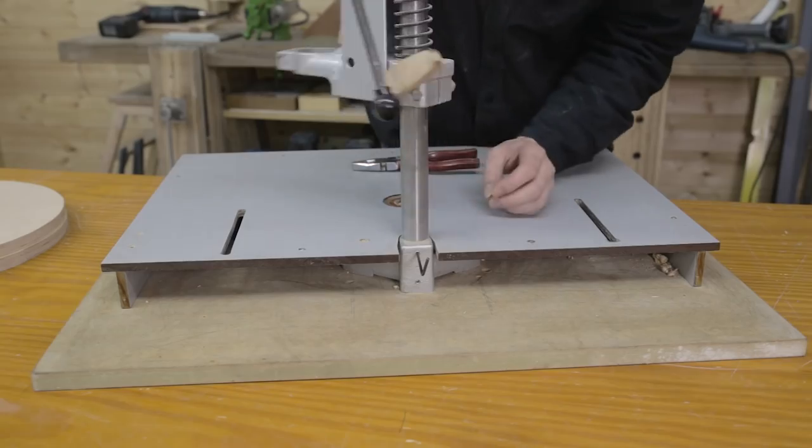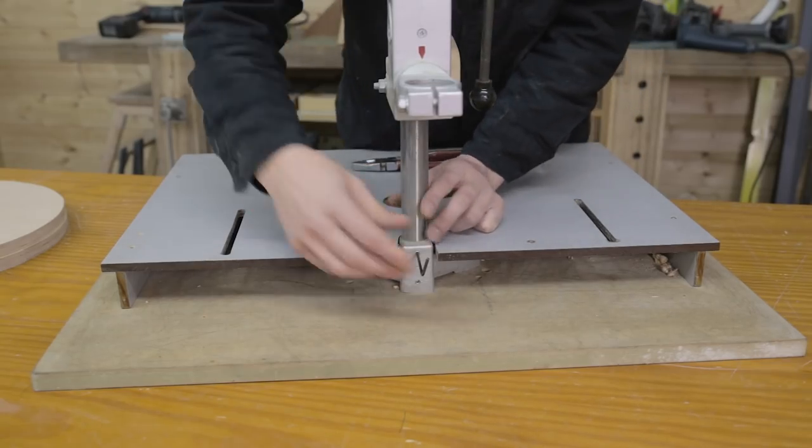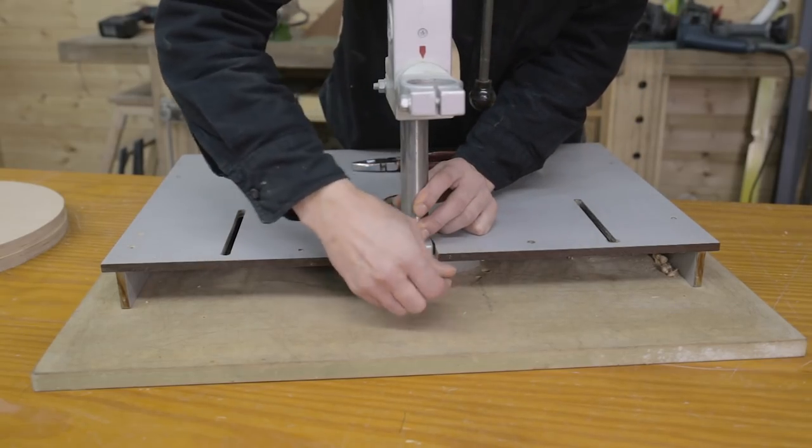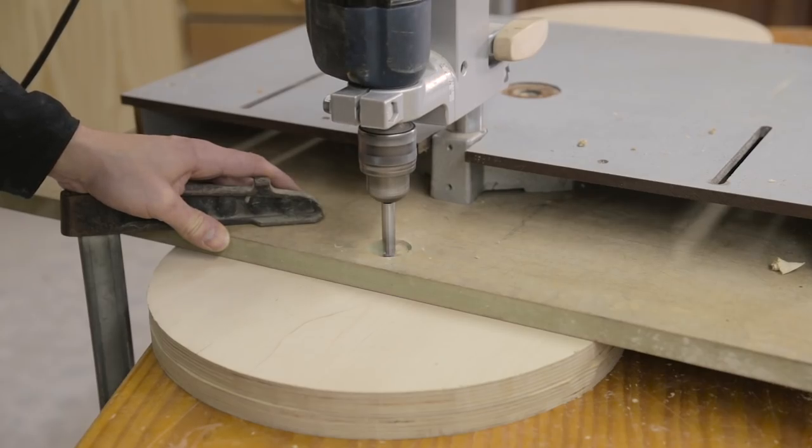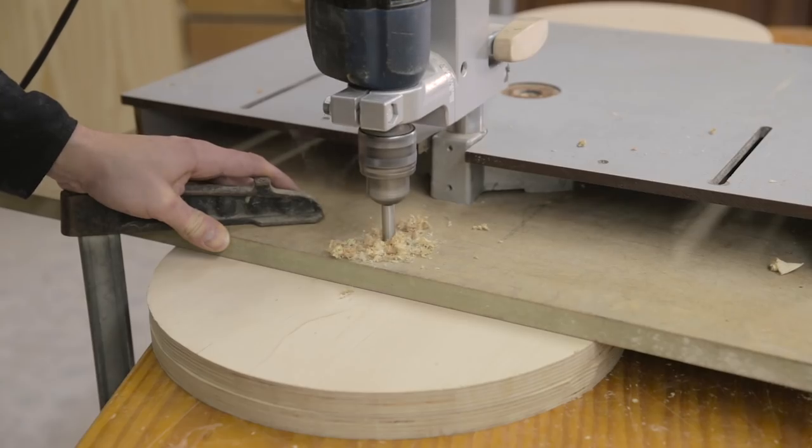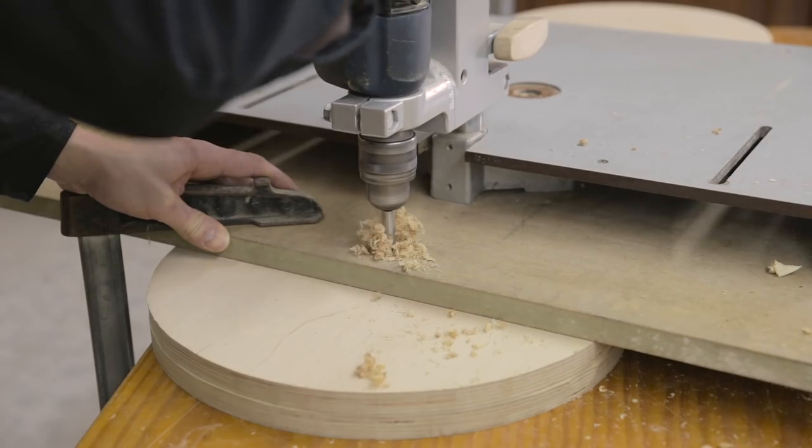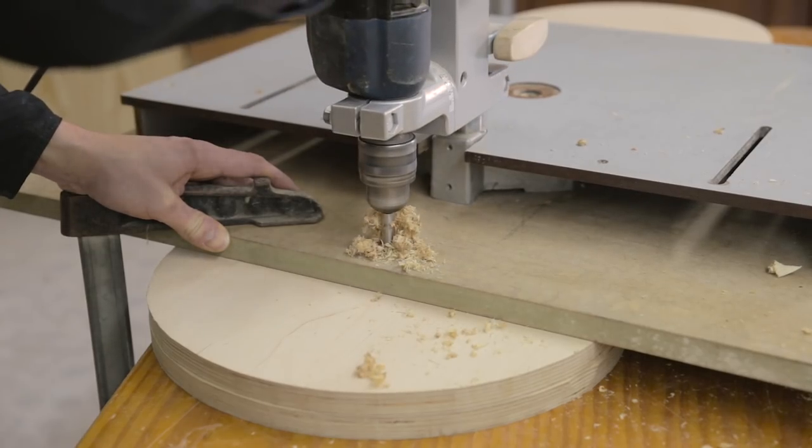To make the hole in the center, I'm going to rotate my column drill. This way I'll get a perfectly vertical hole. I'll use a bit two millimeters bigger than the shaft's calibrated rod.